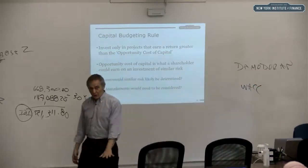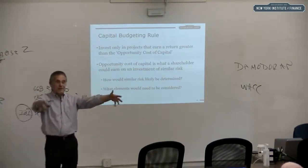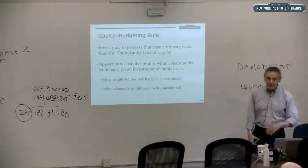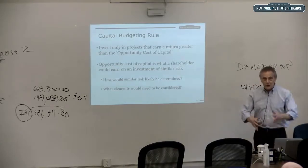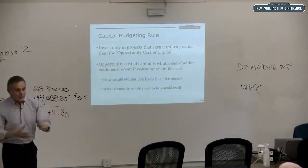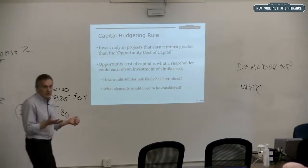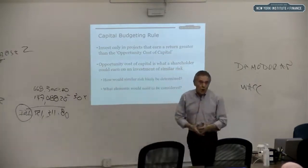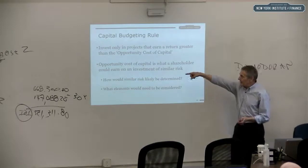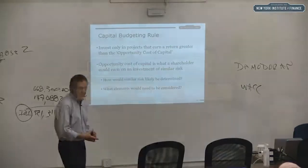Does that mean you should always use a 20% opportunity cost of capital for any restaurant business? No — if you're opening a McDonald's franchise, nearly all of them are successful, so that would mean a much lower opportunity cost of capital than if you're opening a new standalone restaurant. With McDonald's, travelers know the brand and will come in even if they don't know you personally. Opening a standalone restaurant — your own independent concept — is very different from opening a franchise of a successful international chain.